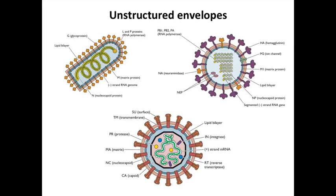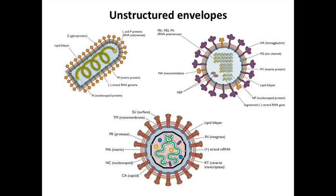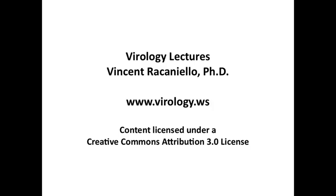Many virions of this kind are not structured. Influenza virus, rabies virus, and retroviruses are examples where the glycoproteins float in the lipid envelope and don't have any structure whatsoever. If you just look at them, they look like a sea of spikes, because they're not being aligned by any underlying symmetry — they're simply surrounding a nucleocapsid.